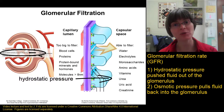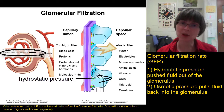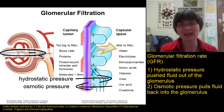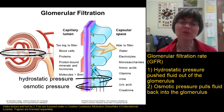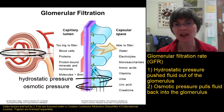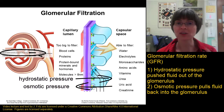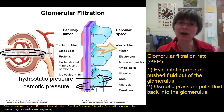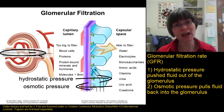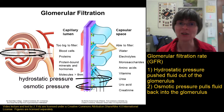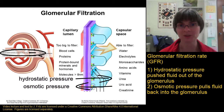As hydrostatic pressure pushes fluid out, osmotic pressure — all the solutes remaining in the blood — attracts water back in. This force depends on the balance of osmolarity of the filtrate compared to the blood. If there's a lot more solute in the blood than in the filtrate, a lot more water is pulled in by osmosis. If there's not much osmolarity difference between blood and filtrate, not as much water is pulled back into the glomerulus.